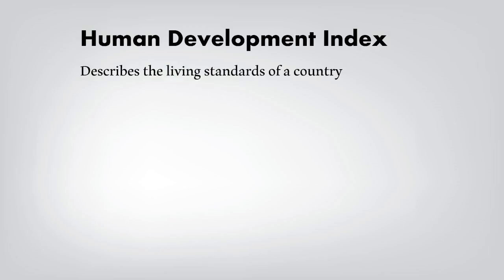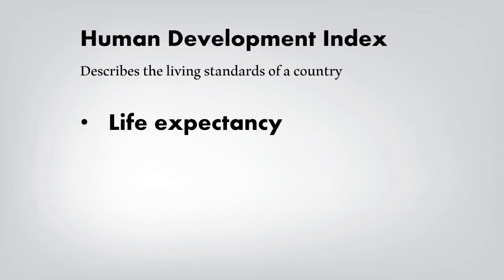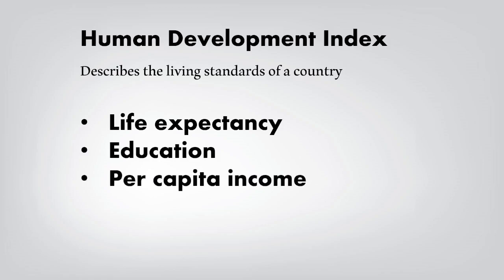Let's look at the Human Development Index. The HDI describes the living standards of a country using three different methods of measurement. It uses life expectancy — the average amount of years someone is expected to live in a country, which can be evidence of standards of living and health advancements. Then there's education, which is the amount of years someone is expected to get a primary school education, and per capita income, which is the average income someone earns in a country yearly.